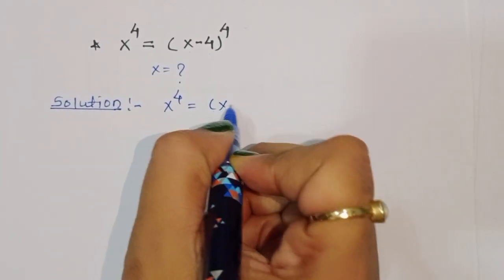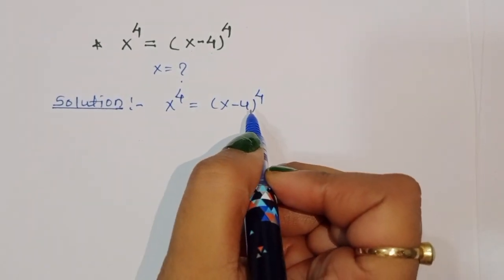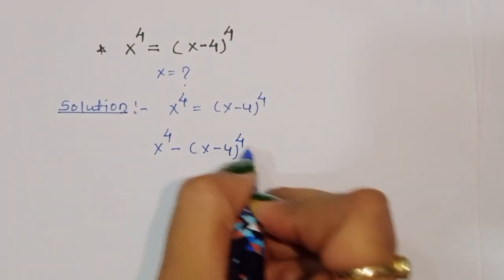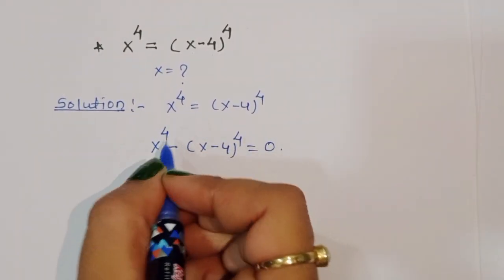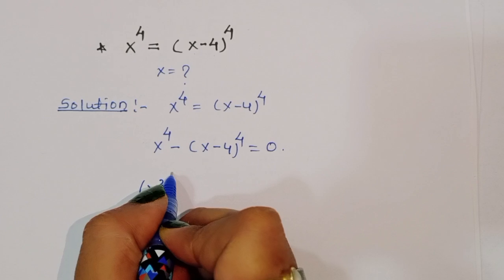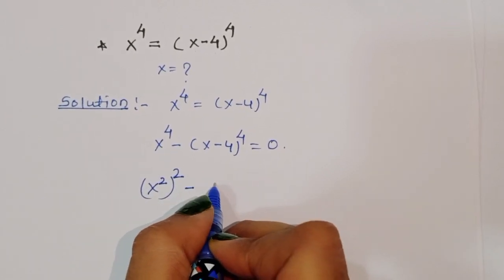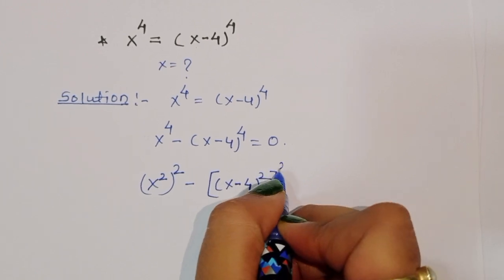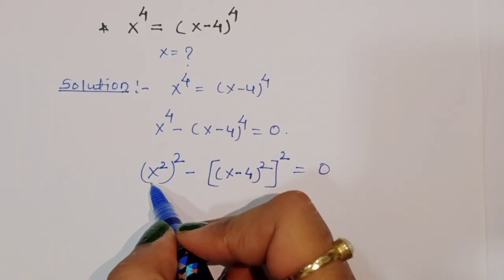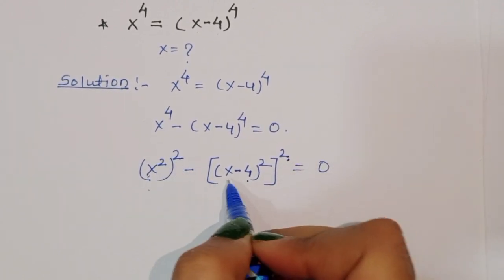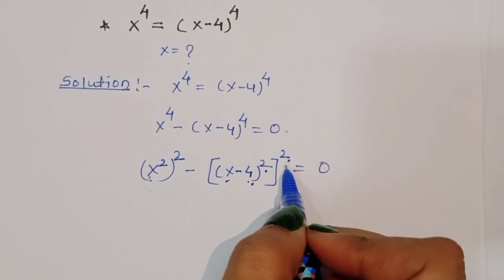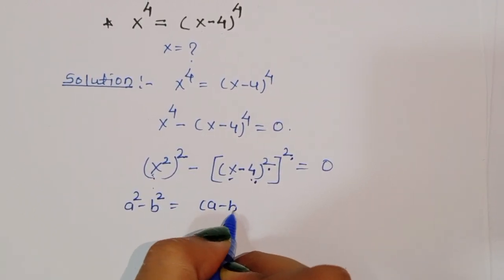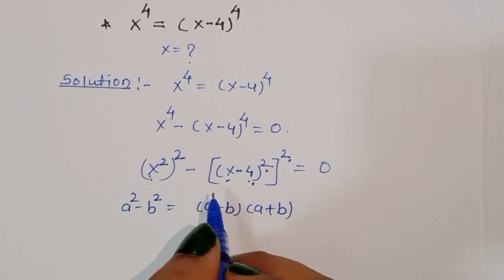x power 4 is equal to x minus 4 power 4 — this is the question. So we can write x power 4 minus x minus 4 power 4 is equal to 0. We can convert this to x square whole square minus x minus 4 square whole square, which is equal to 0. This is the form of a square minus b square, where a is x square and b is x minus 4 square. We apply the formula: a square minus b square is equal to a minus b times a plus b.